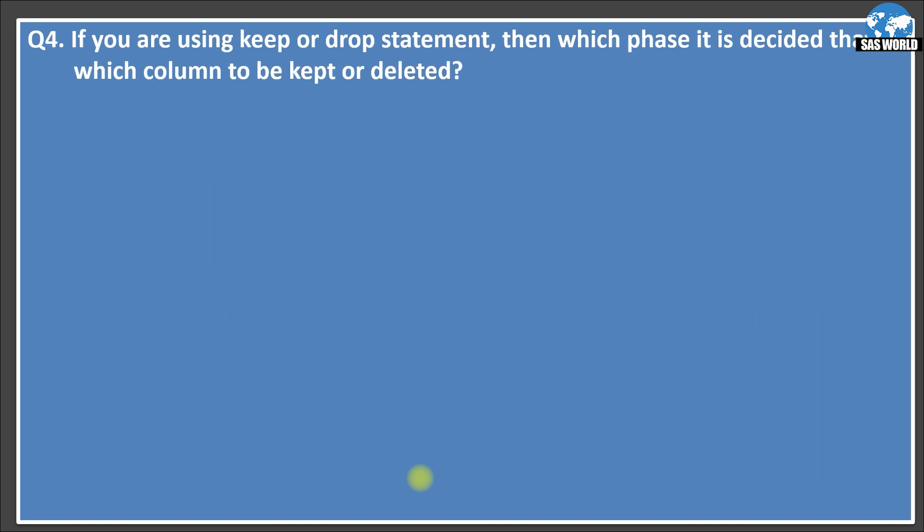Let's move on to the next slide. Okay, here is the another question. If you are using keep or drop statement, then which phase it is decided that which column to be kept or deleted. So if you know the PDV concept, you will know that keep and drop statements are compile time statements. So obviously if these statements are compile time, so it will remove or keep the variable at compile time. So answer is compile phase. It sets the rule for PDV based on your code to which column to be kept or.